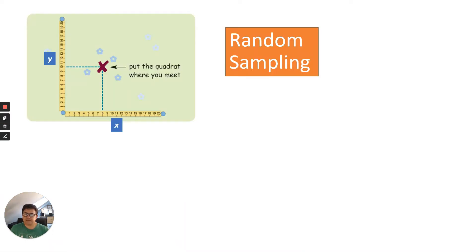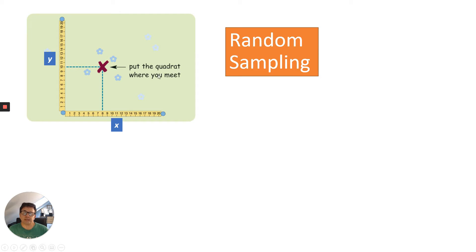Imagine you have a playing field with a population of daisies. You're obviously not going to count every single daisy — that would take far too long. Instead, we use random sampling: using the quadrat to randomly sample an area. I've set out two tape measures going to 20 metres at right angles, giving an x and a y axis. Rather than sample the whole area, we'll only sample it about 10 times.